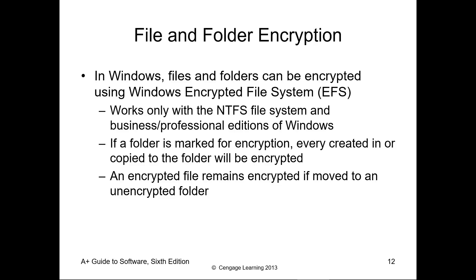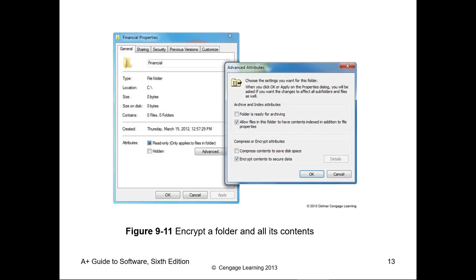Folder and file encryption is also called EFS. You can actually do encryption based on a certificate so that files, folders, or data can be encrypted on a machine. If that data is copied off the machine, those items can no longer be read. We can look at any folder, go to its properties, under the General tab go to Advanced, and click Encrypt. For additional security functionality, go to the Security tab.